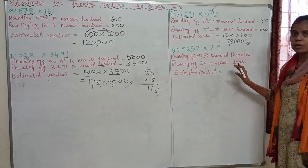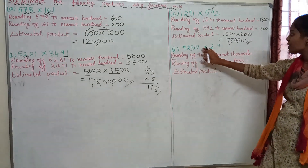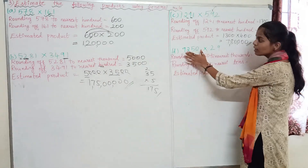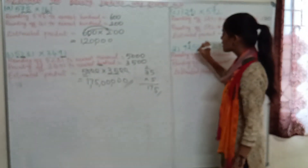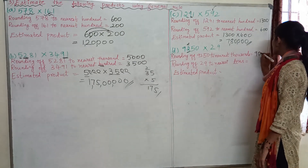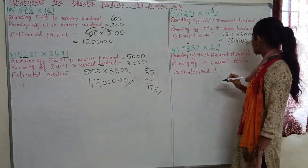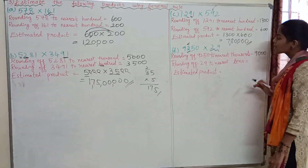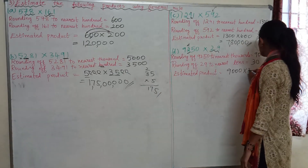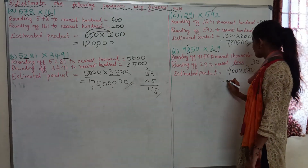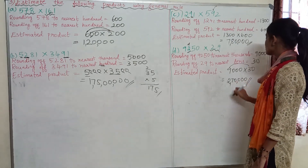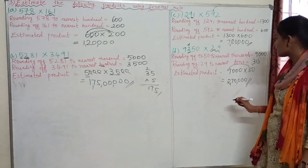Coming to our fourth portion: 9,250 × 29. Rounding off 9,250 to the nearest thousand — look at the hundreds place. The number is 2, and 2 is less than 5, so we round down to 9,000. Rounding off 29 to the nearest ten — 9 is greater than 5, so we round up to 30. Now 9,000 × 30: 9 × 3 is 27, with three zeros and one zero, giving an estimated product of 2,70,000.